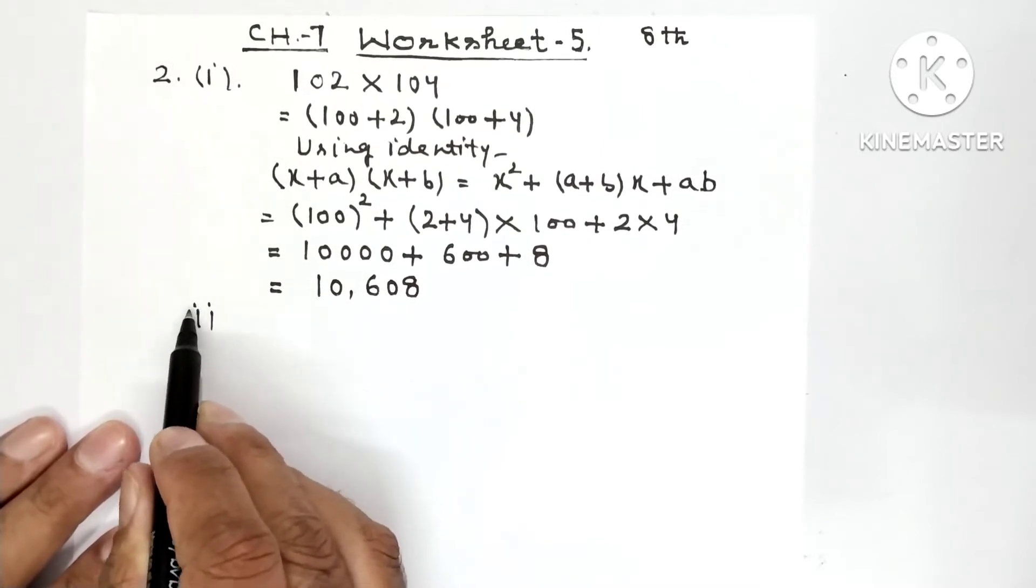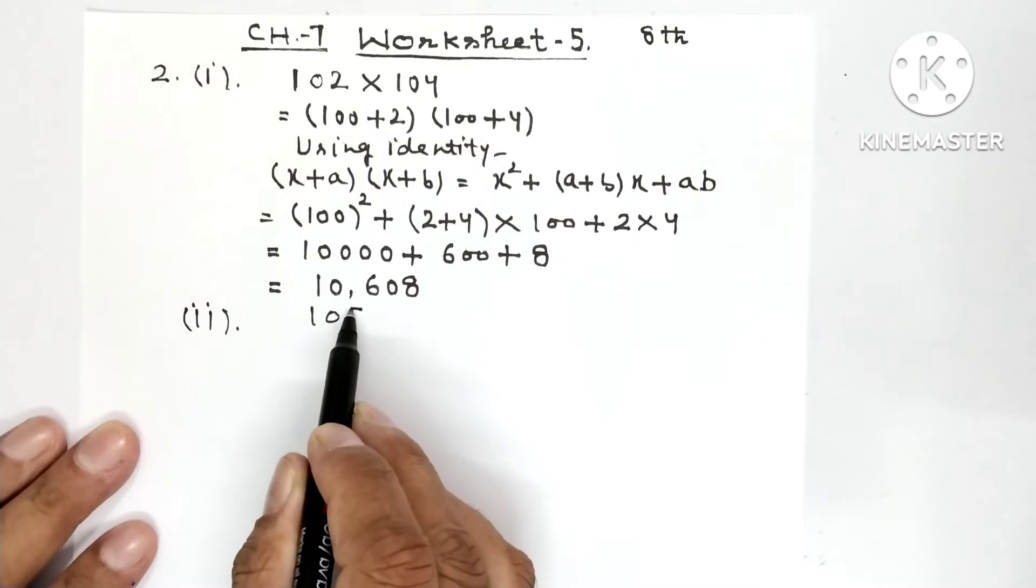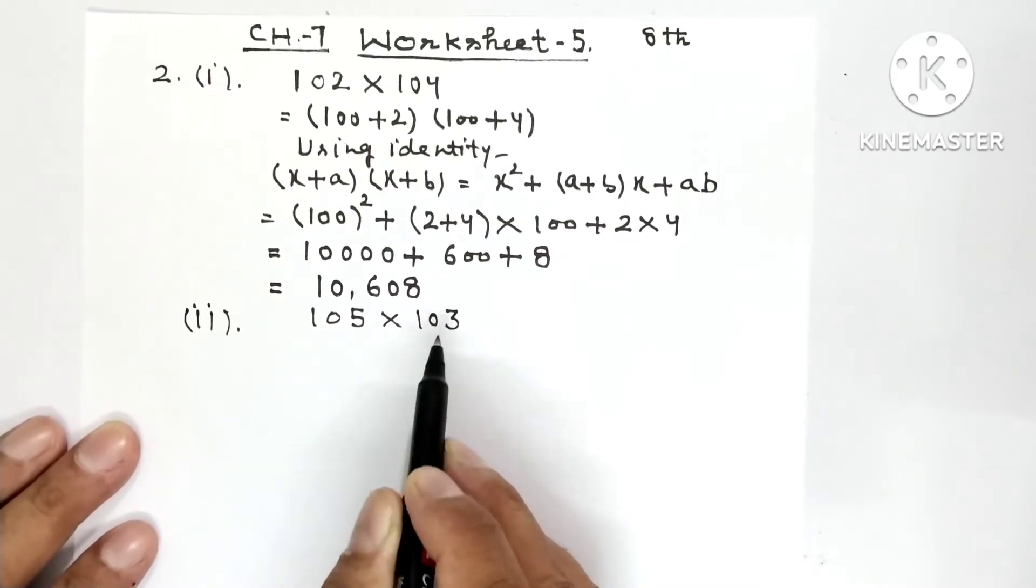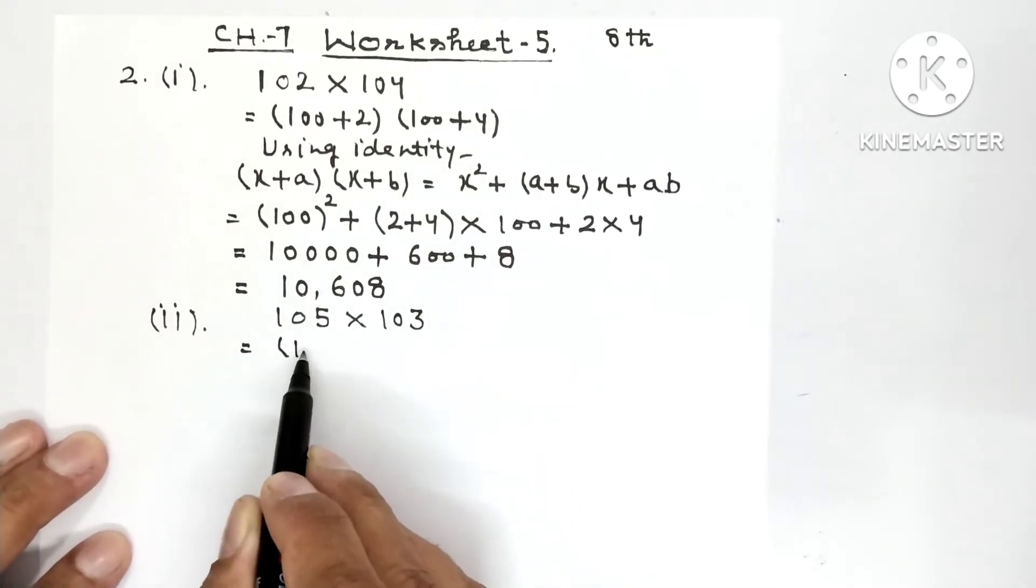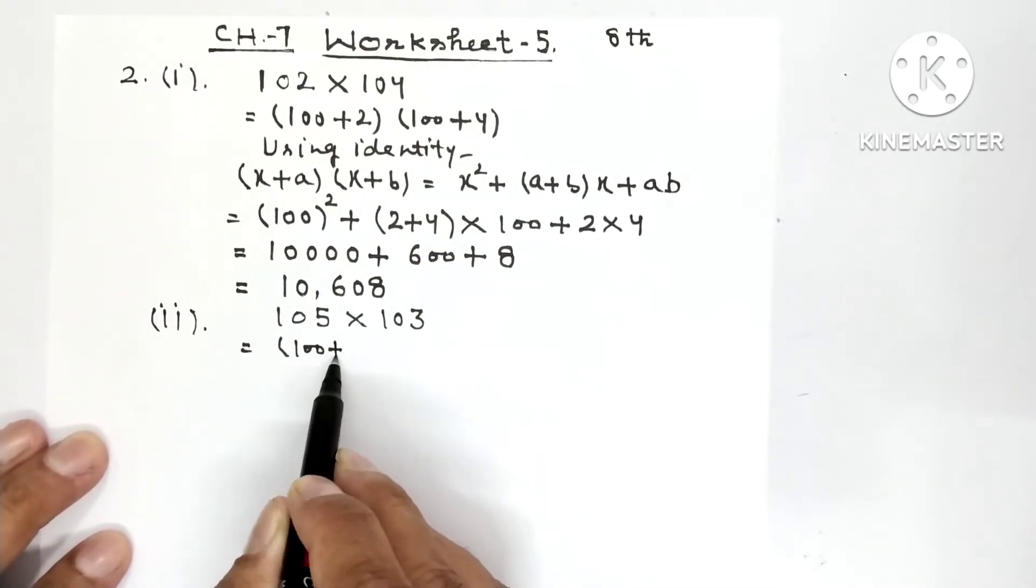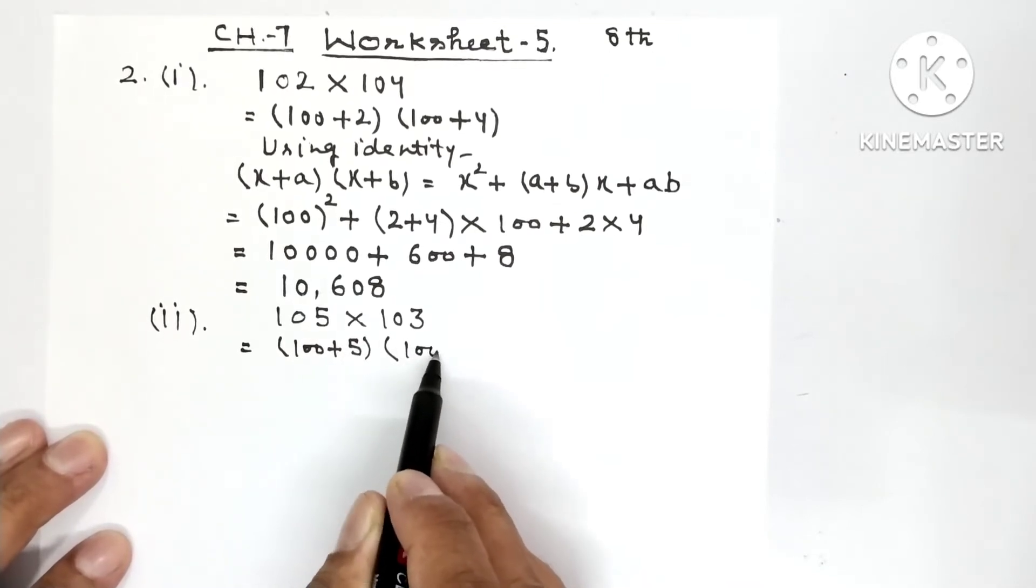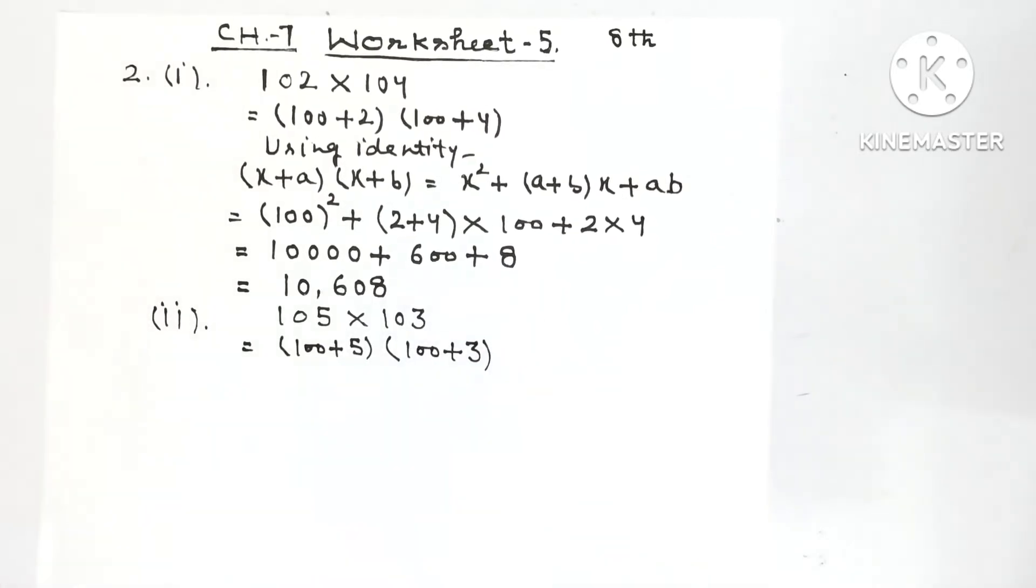Part No. 2: 105 multiplied by 103. Same type of question. 105 in the bracket (100 + 5) into (100 + 3). Again when you have seen it, you have come to know which identity is to be used, same identity as we used in the question above.